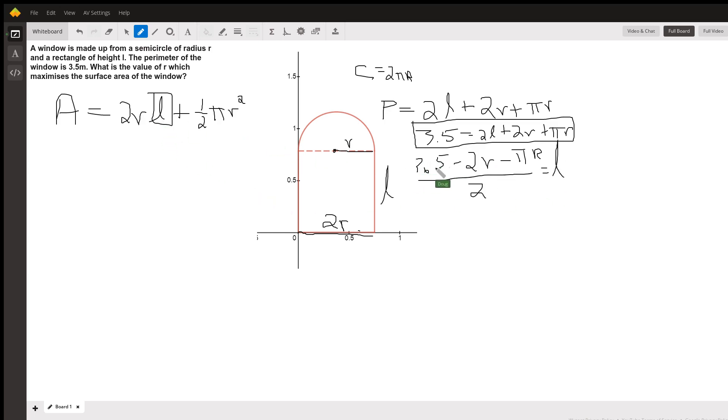So this L I can replace with this mess right here. So finally, we have A is 2R times the mess that I highlighted over here, 3.5 minus 2R minus πR all over 2. That's an expression for L, plus ½πR².